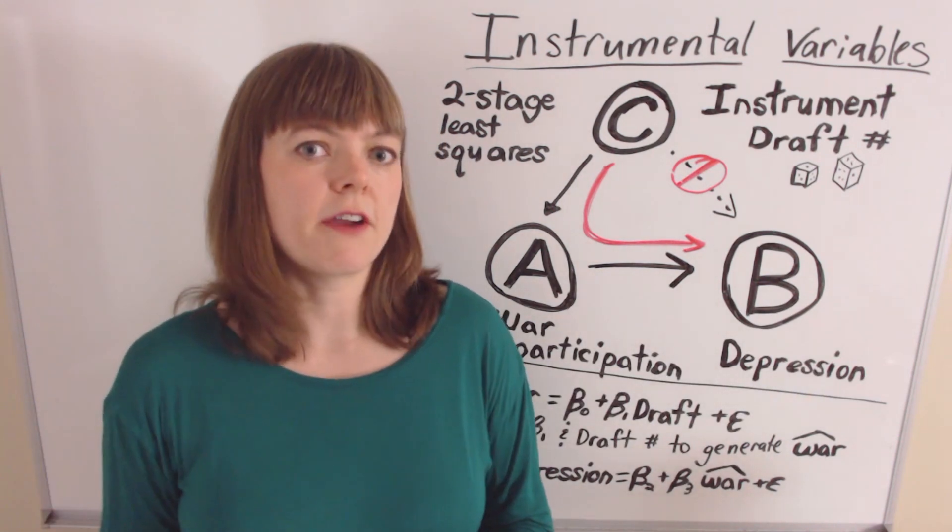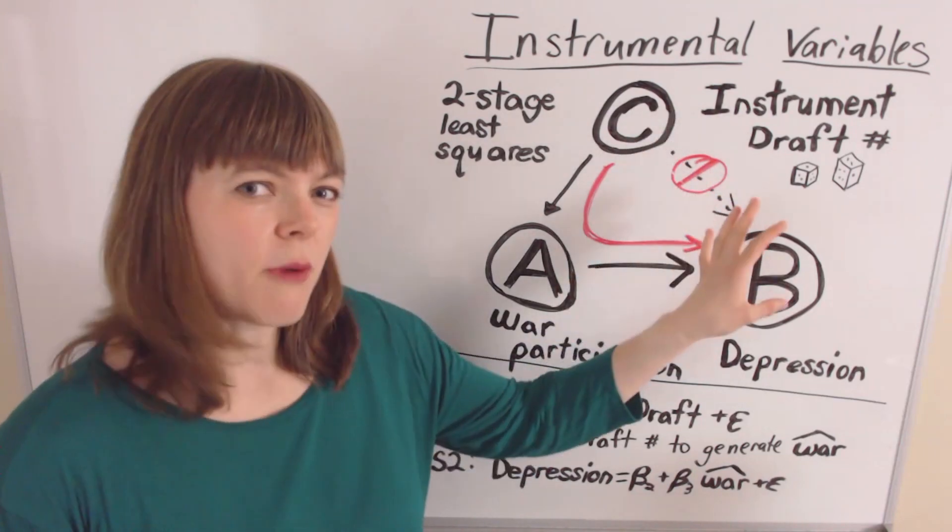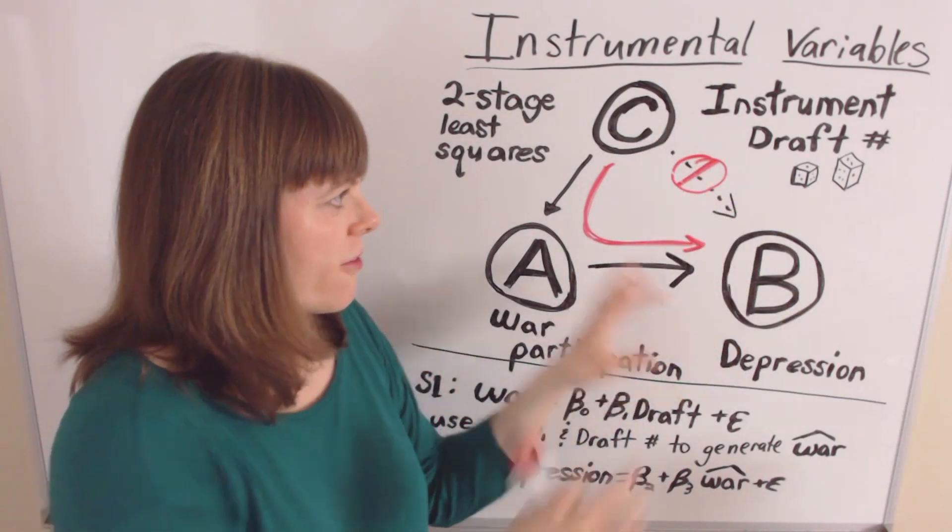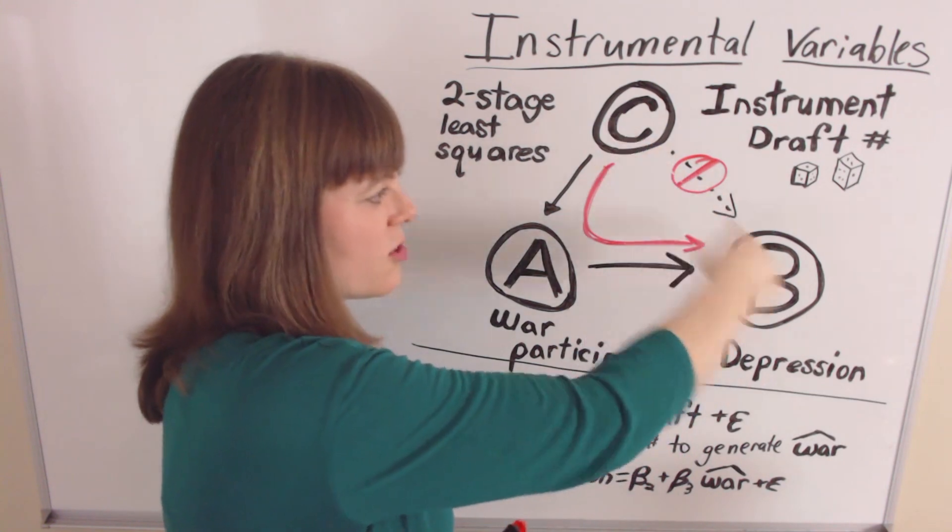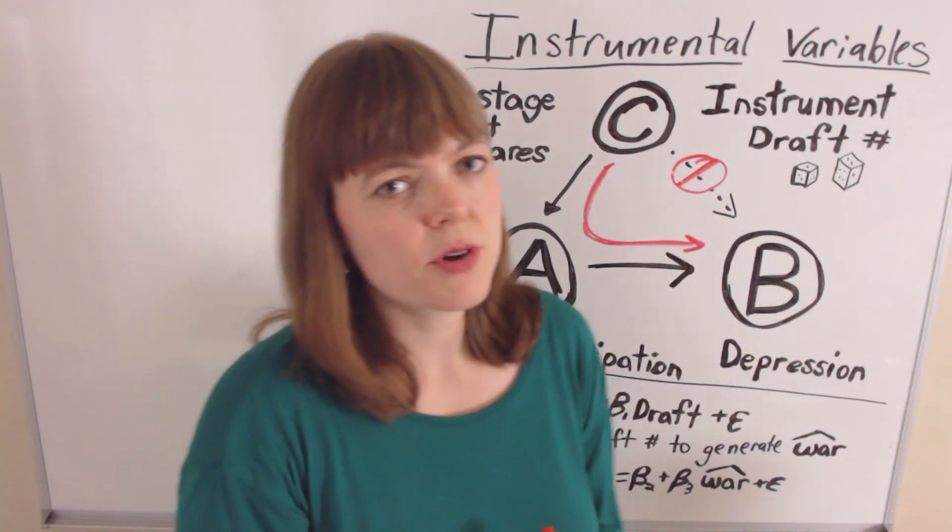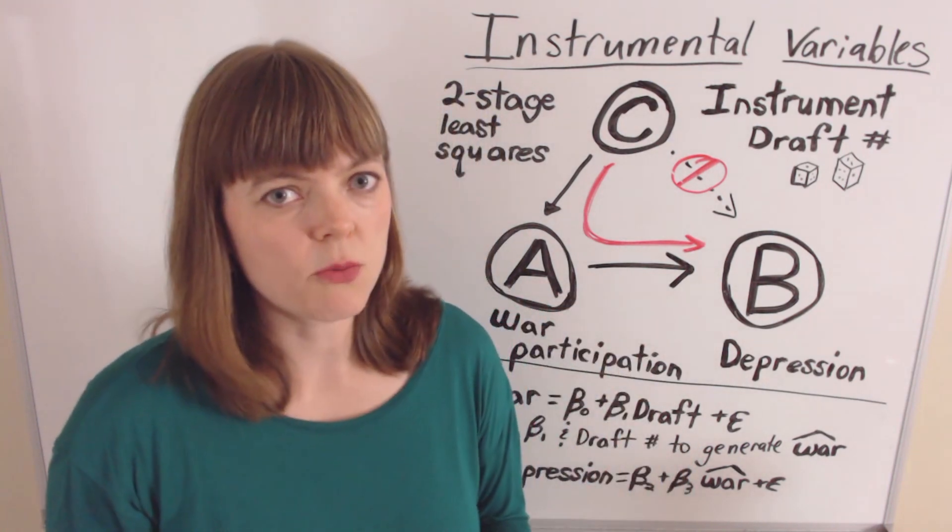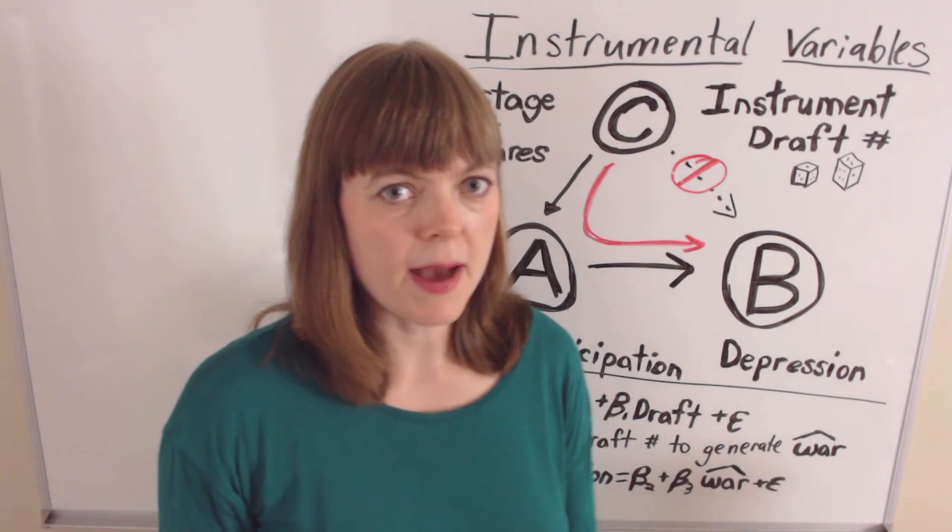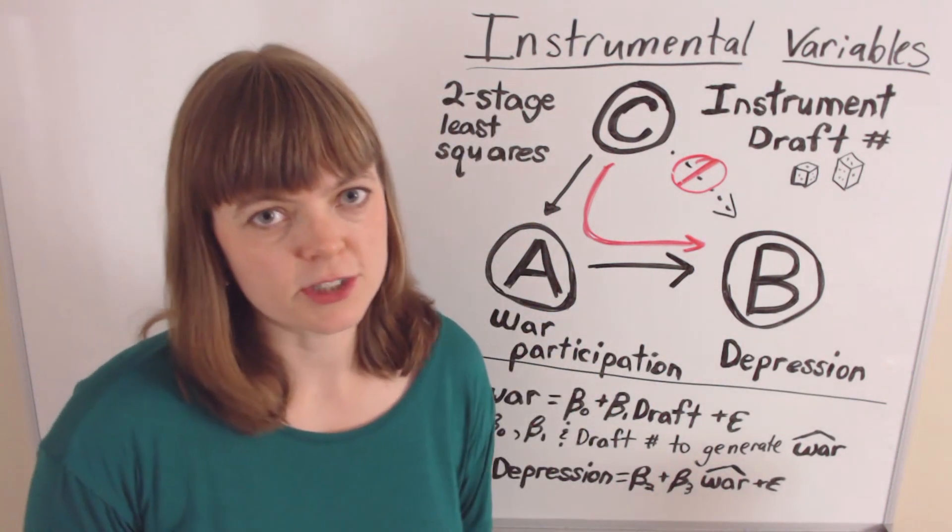And of course with instrumental variables, you're going to have to make an argument, a theoretical argument for this setup. You're going to have to theoretically argue that there's no way that these two things could be causal except through this mechanism. And that's actually a pretty hard thing to argue generally. So there is a lot of debate on whether something's a good instrument or a bad instrument, but this is the general process if you're talking about instrumental variables.